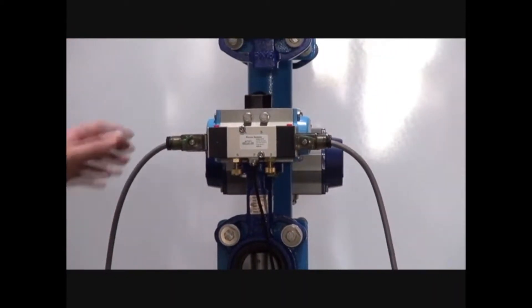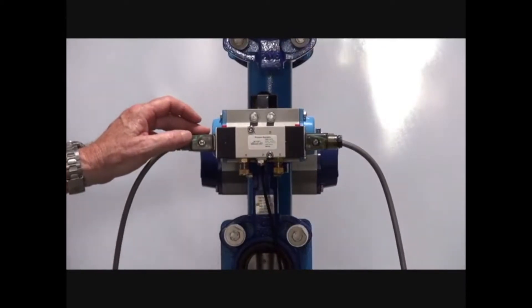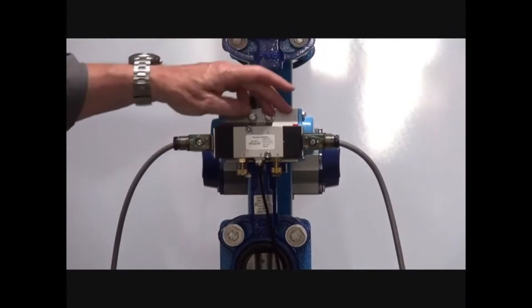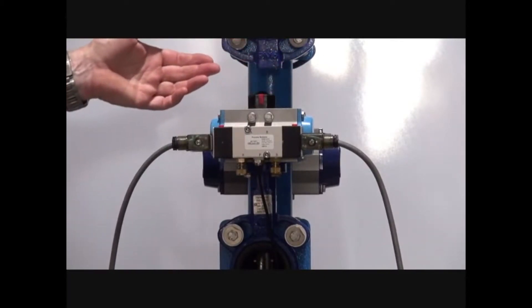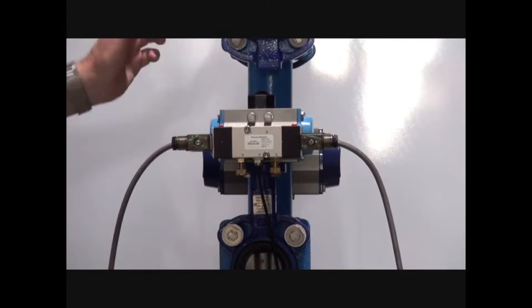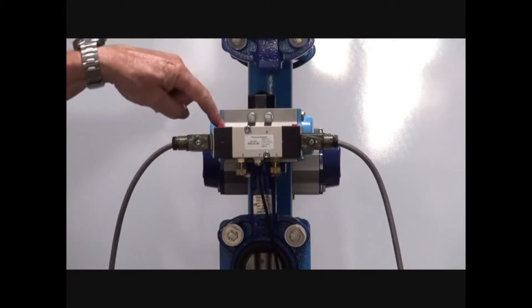The advantage of a double acting double solenoid valve is that you can put a signal on one end and then take that signal off and it will stay where it is. Put the signal back on the other end and it will come back. Manual overrides can also be locked in.